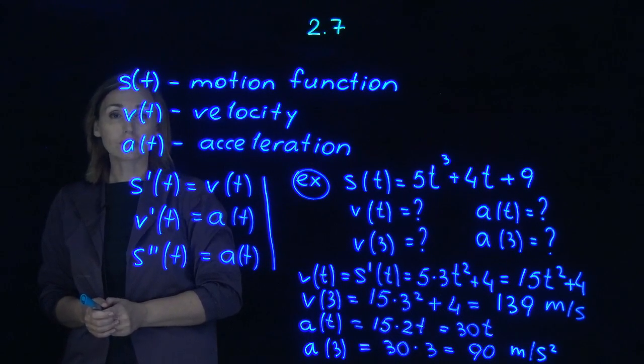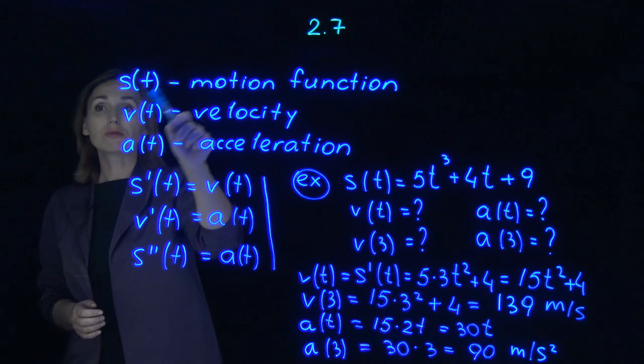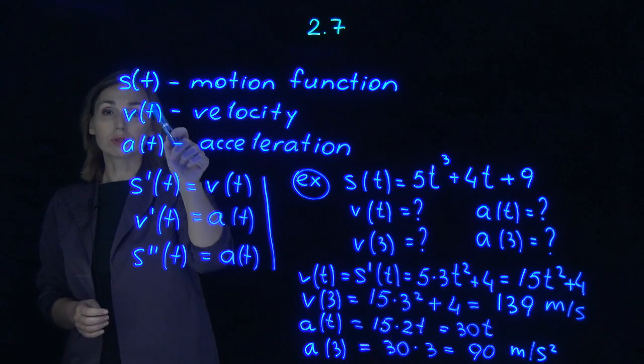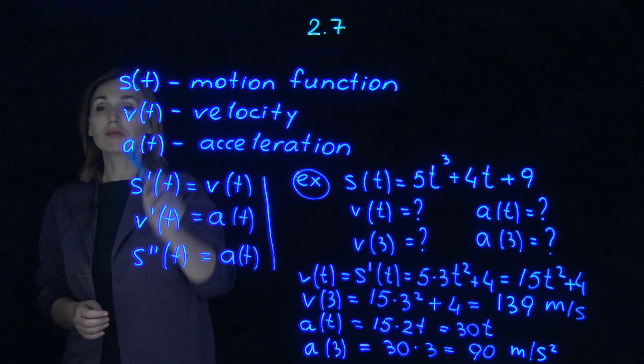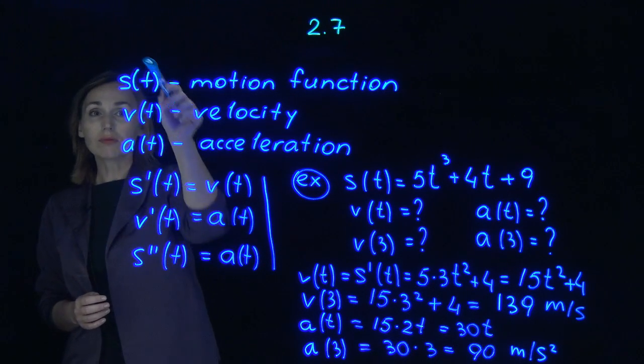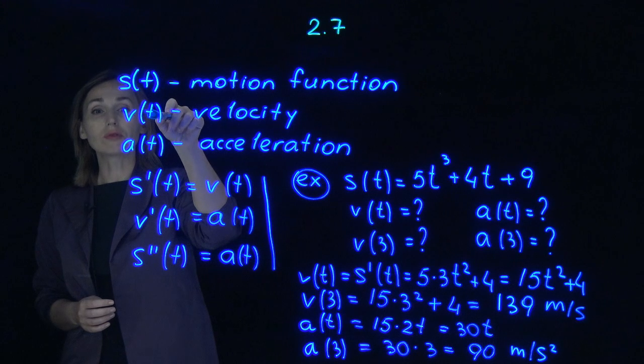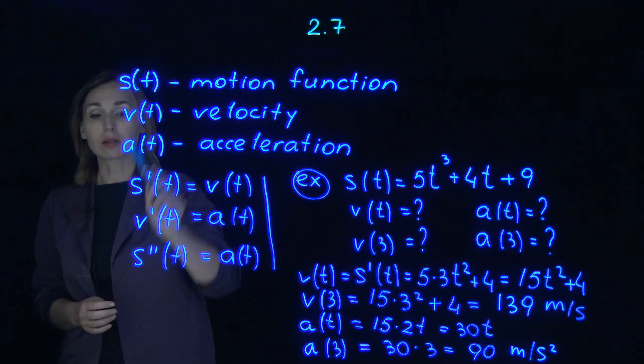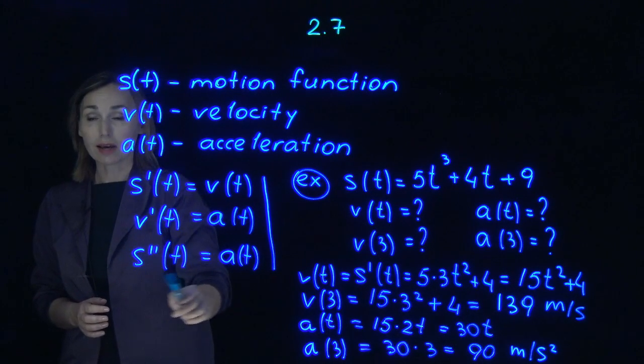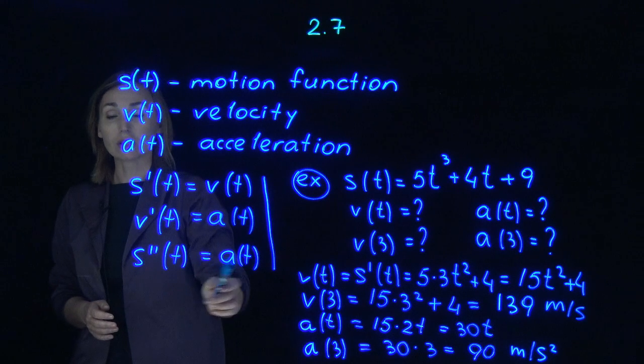What is the connection between them? Derivative of the motion function is velocity, derivative of the velocity is acceleration. That means that if you differentiate motion function first, you will get velocity. If you differentiate it a second time, you will get acceleration. So second derivative of the motion function is acceleration.